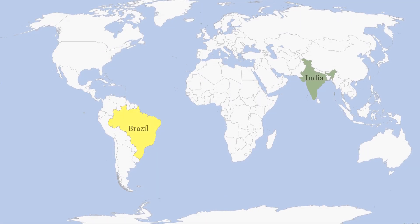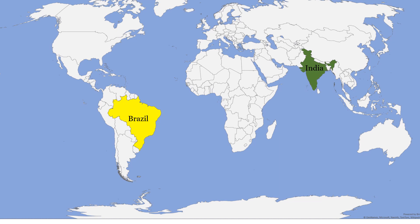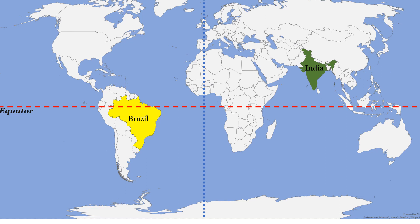This is the world map. This is the equator. The equator, as we have already seen, divides the earth into two hemispheres latitudinally — the northern hemisphere and the southern hemisphere. This is the meridian. It divides the earth longitudinally into two hemispheres — the eastern hemisphere and the western hemisphere.